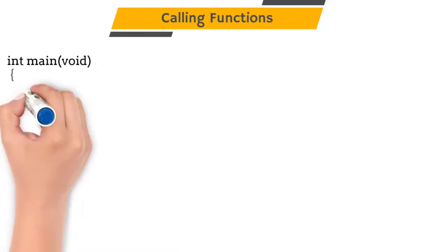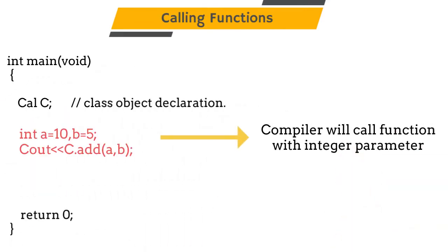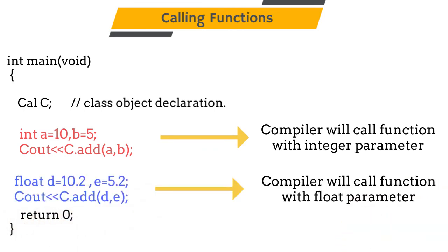When we call the function, if we pass integer as a parameter then the compiler will call the first function. If we pass float as a parameter then the compiler will call the second function. So we can create two or more functions with the same name. This is called method overloading.